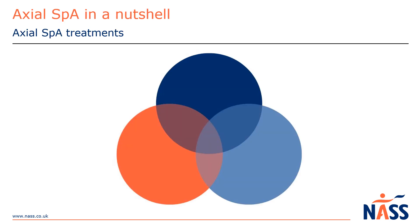Axial SpA is managed with a combination of medications to reduce inflammation, exercise to improve and maintain mobility, and self-care techniques to manage different symptoms. Your GP or rheumatologist can prescribe non-steroidal anti-inflammatory medications, also known as NSAIDs. This includes ibuprofen, diclofenac, etoricoxib and celecoxib. NSAIDs help to dampen down the inflammation that causes the pain, stiffness and other issues.